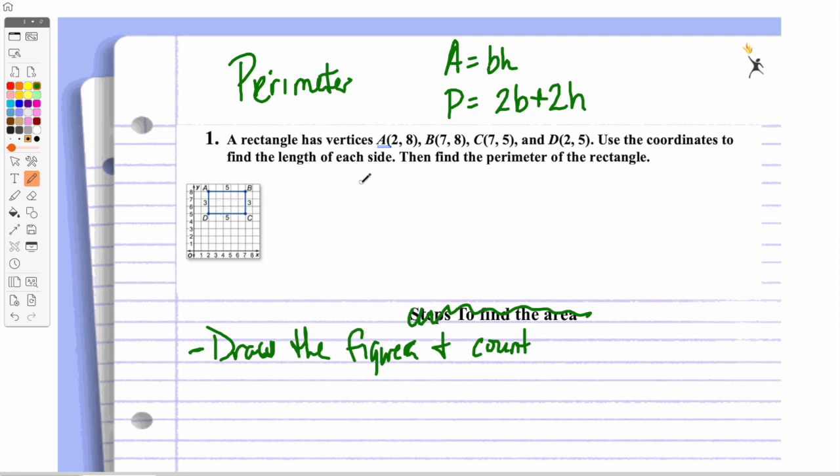So 1, 2, 3, 4, 5, so 2 times 5. And my height is 3 plus 2 times 3, so I get a perimeter of 16 units. I don't have a unit squared or I don't have centimeters or inches or anything, so I just have to put units.